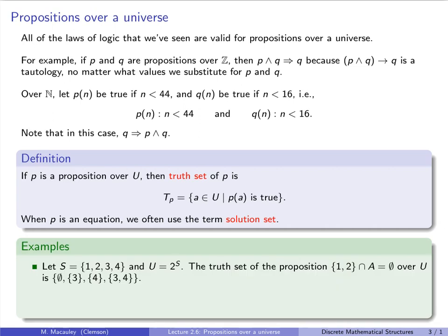Here are some examples. Suppose S = {1, 2, 3, 4} and U is the set of all subsets of S. The truth set of the proposition '{1,2} ∩ A is non-empty' over U is the collection of subsets for which this statement is false — that is, the subsets that don't contain 1 or 2: the empty set, {3}, {4}, and {3,4}. These are precisely the subsets of S whose intersection with {1,2} is empty.